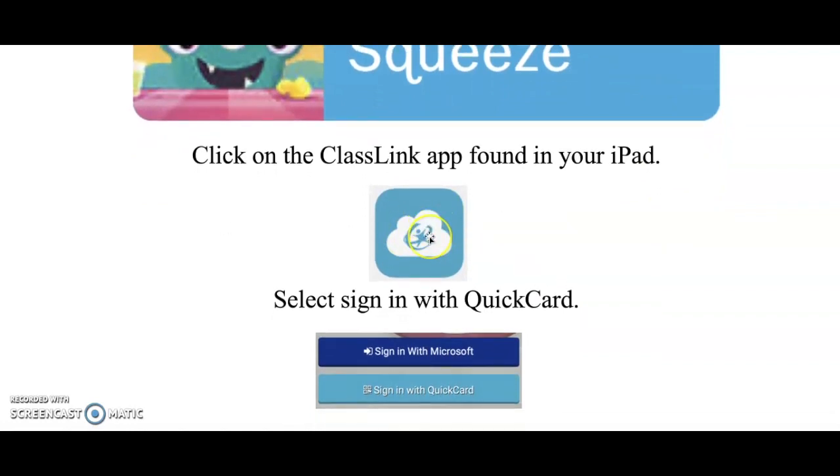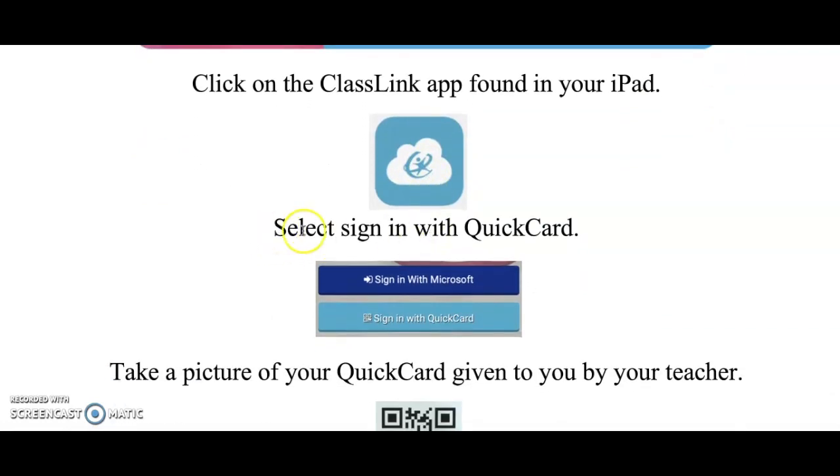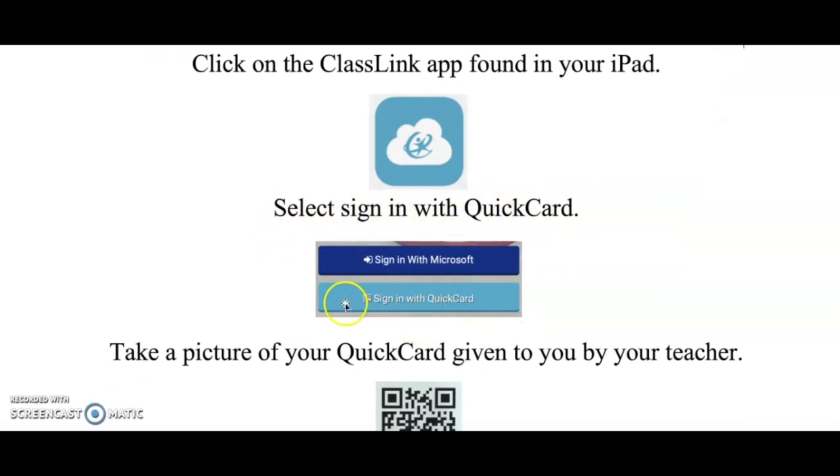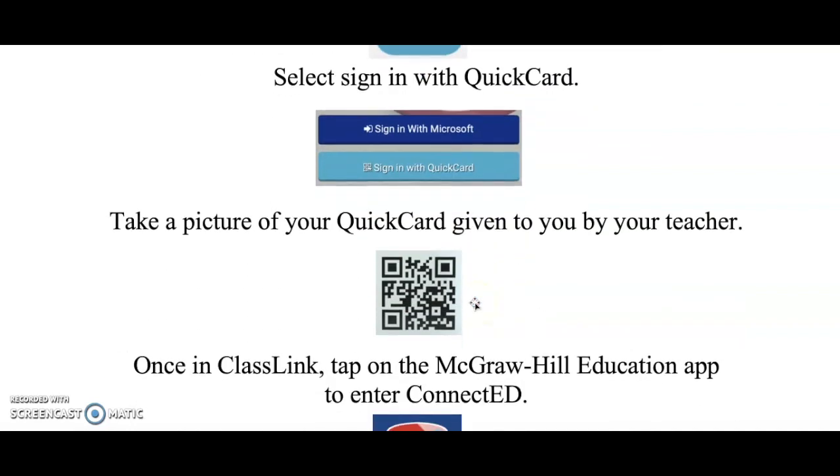Once you click on the ClassLink app, you're going to select the sign in with Quick Card. It's the bottom option in light blue. Then you're going to take a picture of your Quick Card given to you by your teacher. It might look something like this.